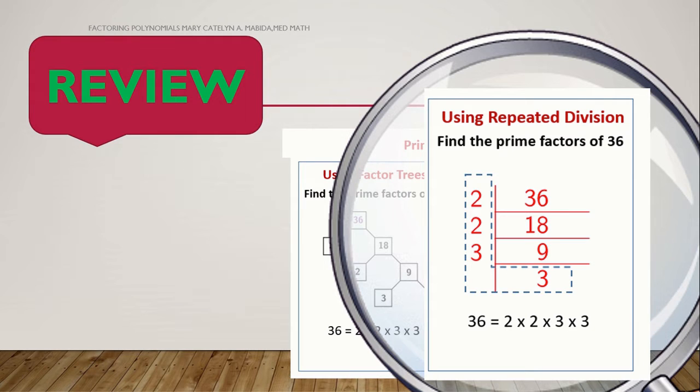Now, let's focus our attention on the numbers outside. 2, 2, 3, and 3. These are all the prime numbers that are prime factors of 36. And we are going to multiply it like so. So, 2 times 2 times 3 times 3. Again, 2 times 2 times 3 times 3. And you will get 36.